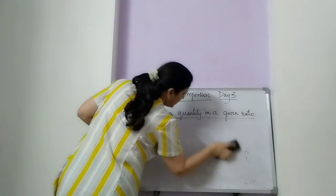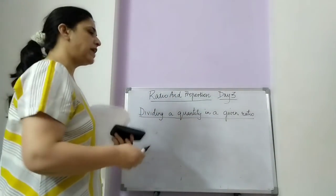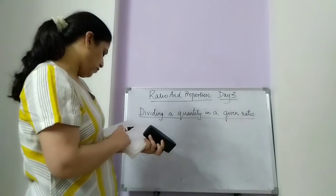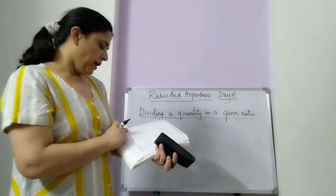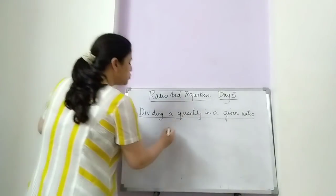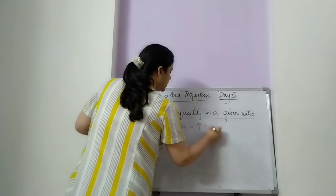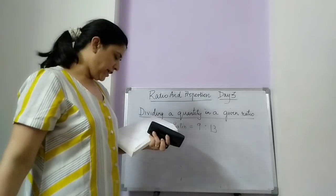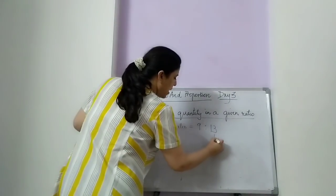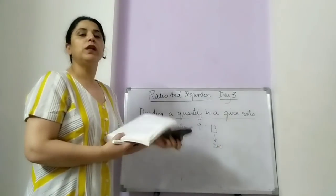Now the second type of question where the ratio is given. The ratio is nothing but a fraction. Question number 12 of your book: a certain sum of money has been divided into two parts in the ratio 9 is to 13. The ratio is 9 is to 13. If the second part is 260, that means this part is 260. You have to find the total amount.